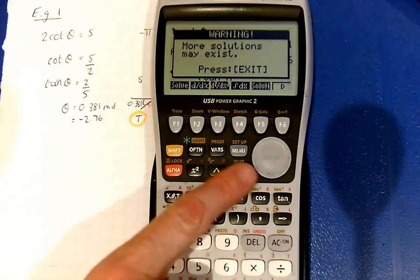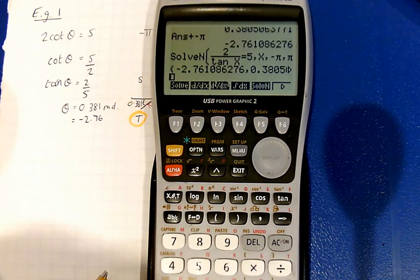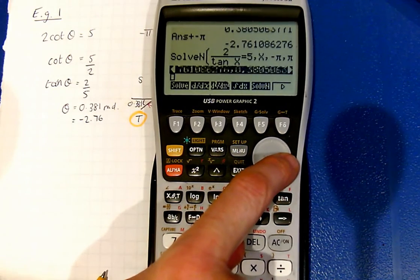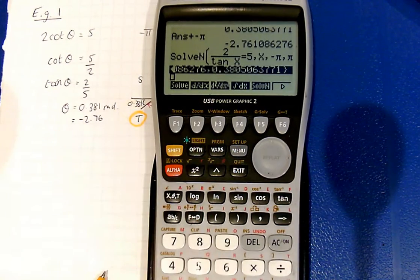It always says this. There may be more solutions, but we do exit. And there we go. We've got negative 2.76 and 0.381. So that's a good reassurance.